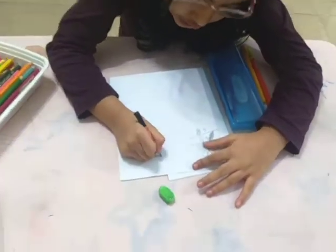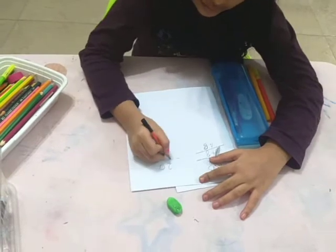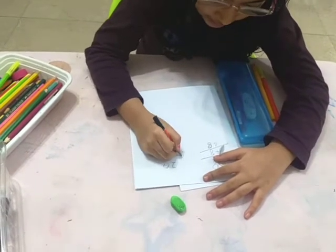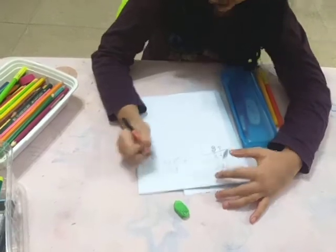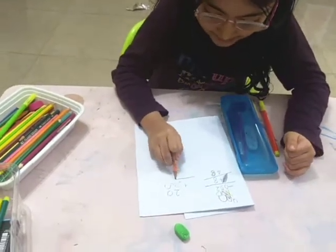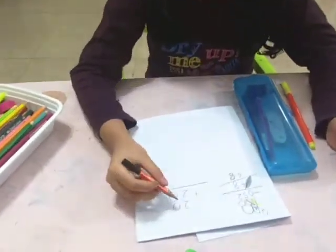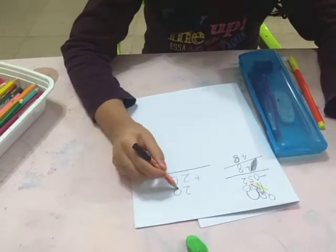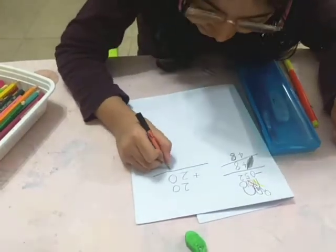Let's write 20 minus, no, plus 20. Okay? Now, I've written. Now, I'm going to give a big, big, big slash. Now, let's try.